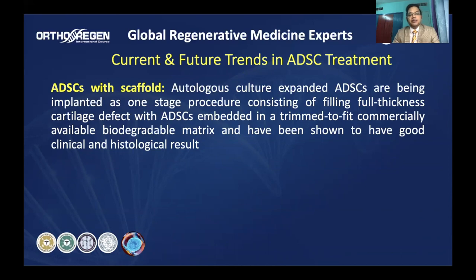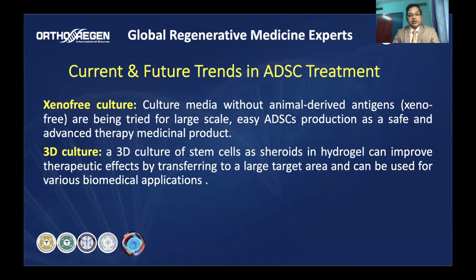For the future of stem cells, adipose-derived stem cells are being used with scaffolds — for example, a biodegradable matrix scaffold embedded with adipose-derived stem cells for full-thickness cartilage defects has shown good results. There are also attempts to use xenogene-free culture without animal-derived antigens to produce large-scale, safer products. Three-dimensional printing and 3D culture of stem cells as spheroids in hydrogel have been shown to improve transfer of stem cells to large targeted areas.